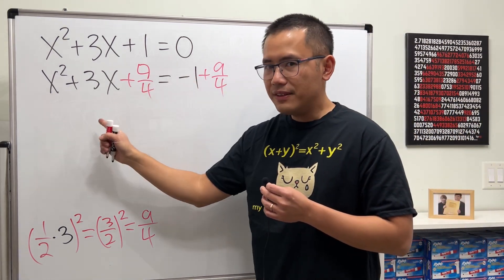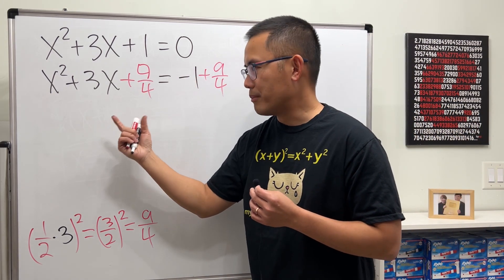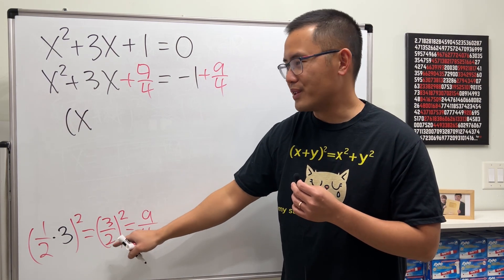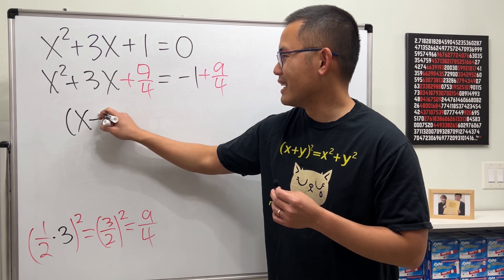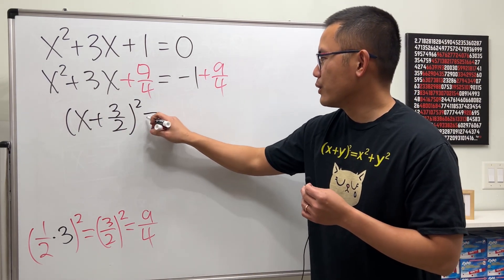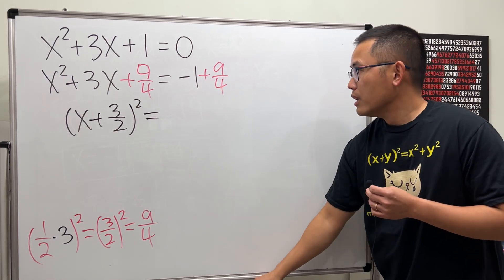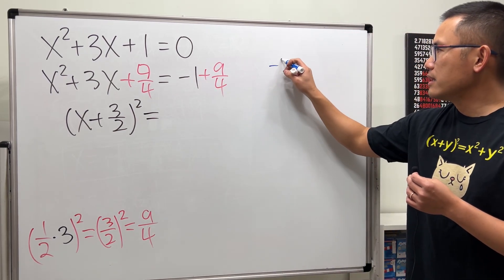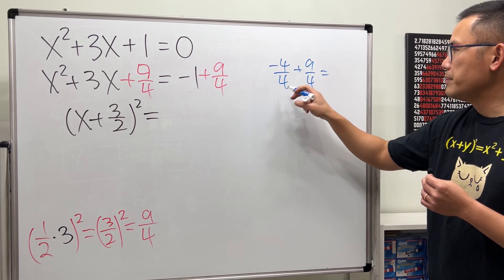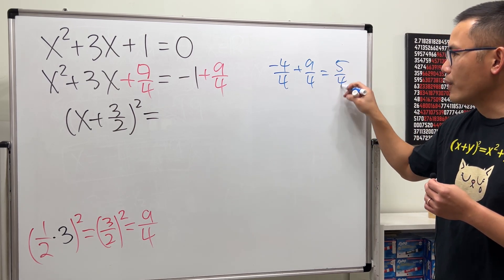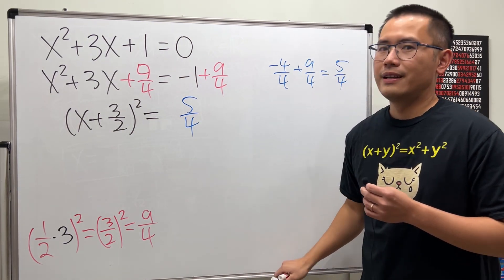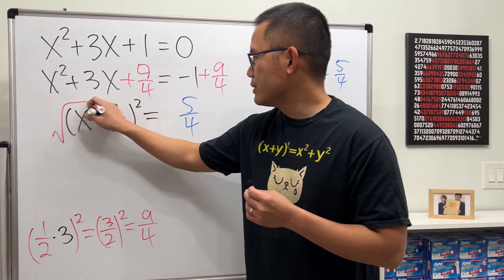On the left-hand side, we can for sure complete the square and we will get (x + 3/2)². Then on the right-hand side, let's just go ahead and add the fractions real quick. Negative 1 is the same as negative 4/4, plus 9/4. Same denominator already, so that will be 5/4.